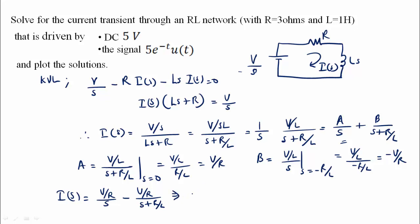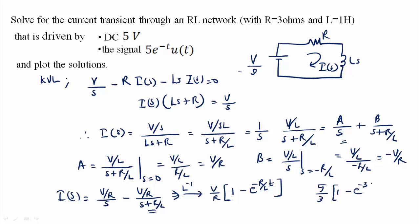Taking the inverse Laplace transform: 1/S corresponds to U(t), and 1/(S plus R/L) corresponds to e raised to power minus R/L times t. So i(t) equals V/R times (1 minus e raised to power minus R/L times t). With R/L equal to 3 by 1, we get minus 3t.